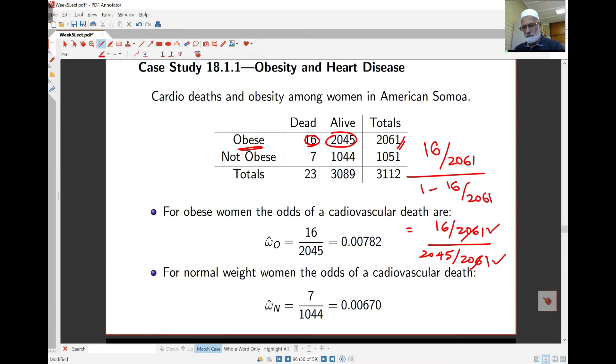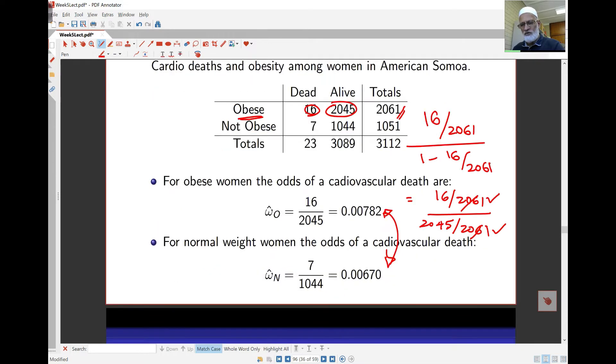For normal weight women, it's 7 over 1044. So I may be interested to see whether there is a difference here between these two. And that's what we did earlier. We were looking at probability of death for obese women and for not obese women. And in that case, we decided that there was not much difference there. We're looking now here at the odds ratio.